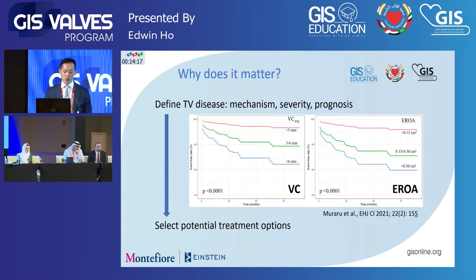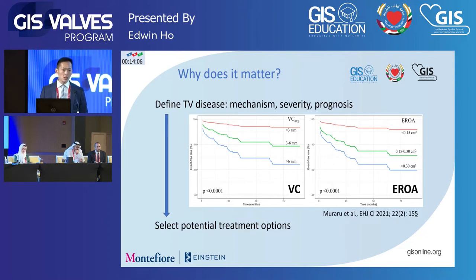So why does it matter? Of course, we always want to define tricuspid valve disease, understand mechanism, and also know severity. Both of those tie into prognosis. We know that in isolated TR, severe TR is actually really bad for patients, and so treating it potentially will help — and data is coming around on that side of things. The anatomy really helps us select our potential treatment options, and those options continue to grow over time.